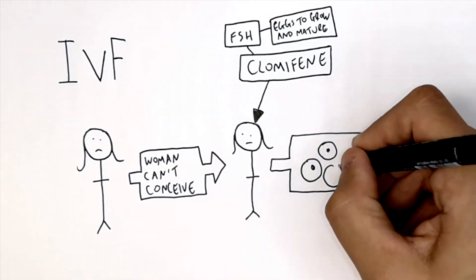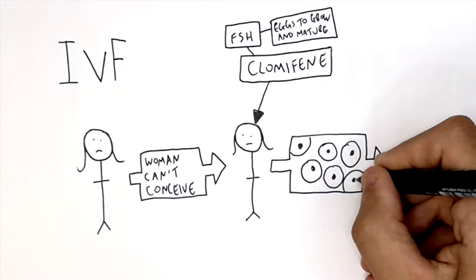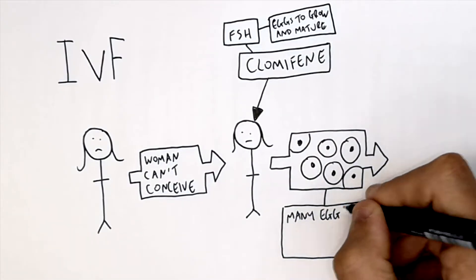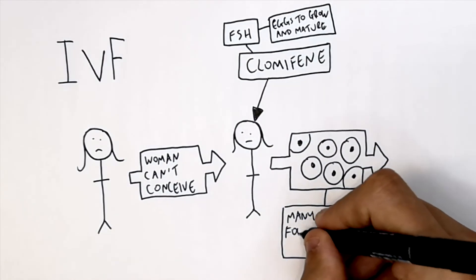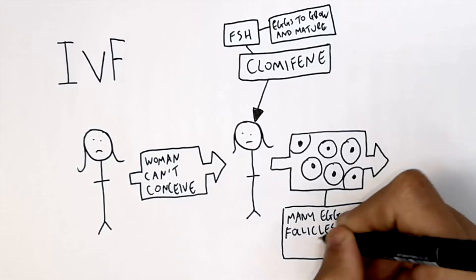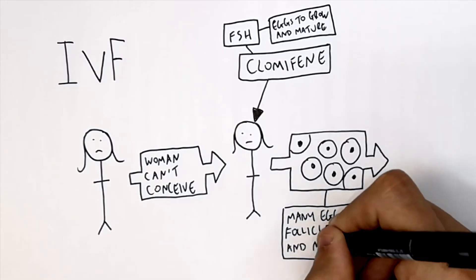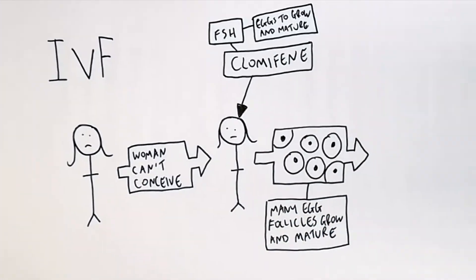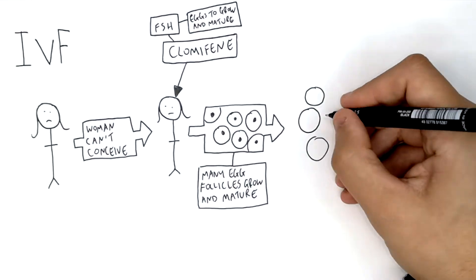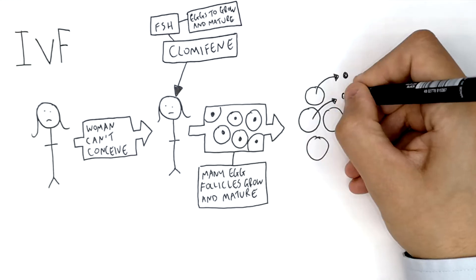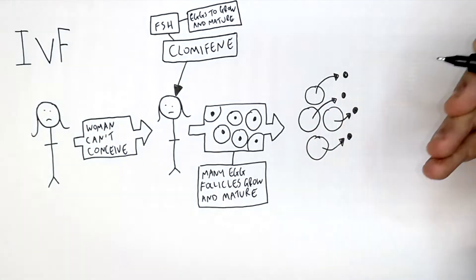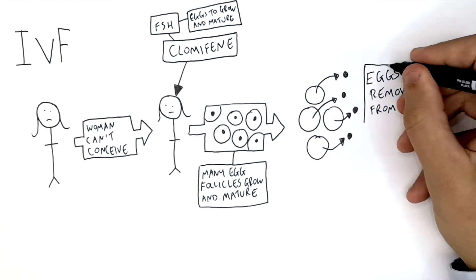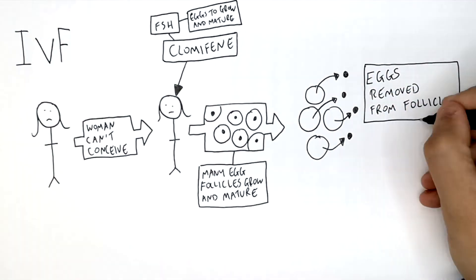She is given FSH, which causes many egg follicles to grow and mature in her ovaries. The next step is to remove the eggs from the egg follicles.